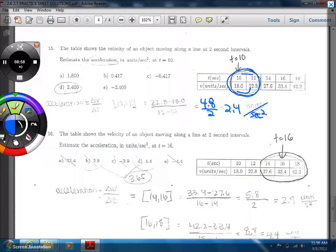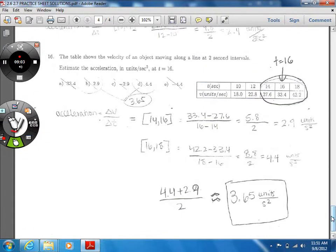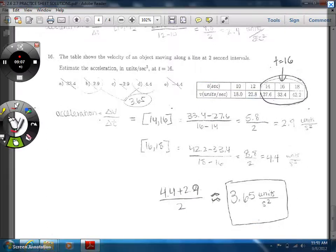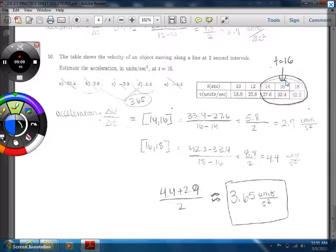And last one, pretty similar, except this time we actually have both sides to work with. So if you have both sides to work with, then you need to use both sides or else it's not considered the best estimate. So right here, we're going to be able to subtract these over subtracting these, we'll get an estimate of 2.9, I believe for that one. And then we'll do the left hand side. And we'll get an estimate of 4.4. And then we'll average the two. And we'll get 3.65 units per second squared.